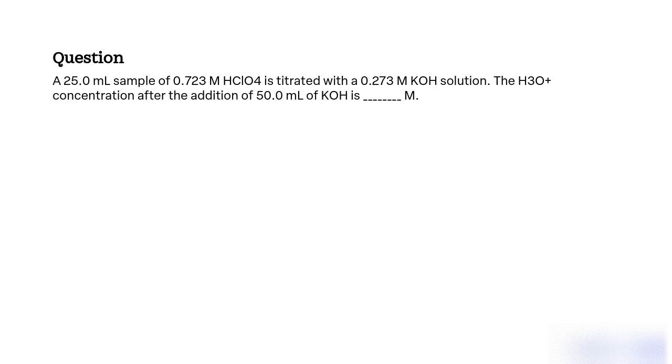The objective is to determine the concentration of H3O+ after adding 50.0 mL of 0.273 M KOH to a 25.0 mL sample of 0.723 M HClO4 during a titration.